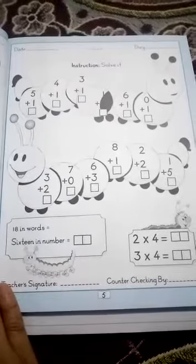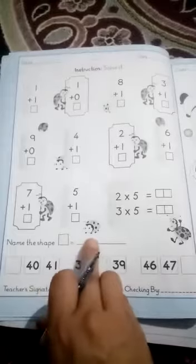Firstly mention the date, classwork, and day. Kids, page number four we have done sums of addition. Name the shape - you can see the square. Words come before, words come between, and words come after.